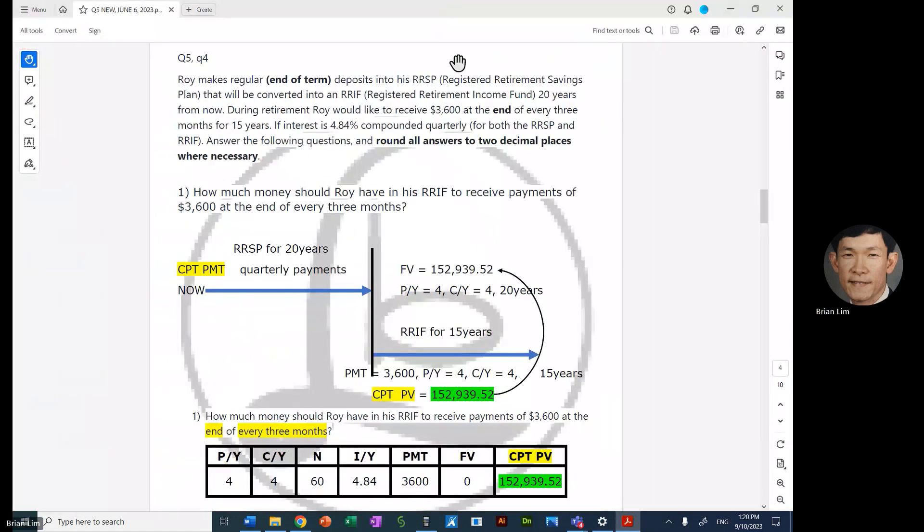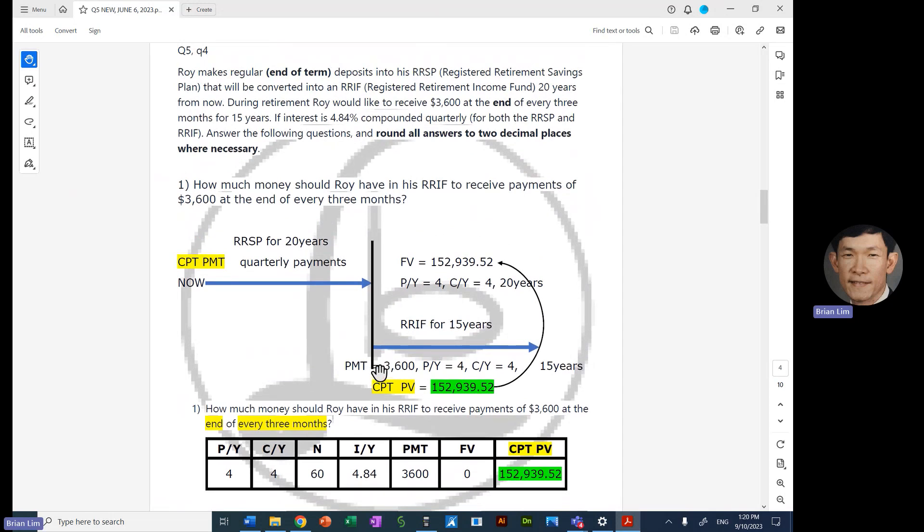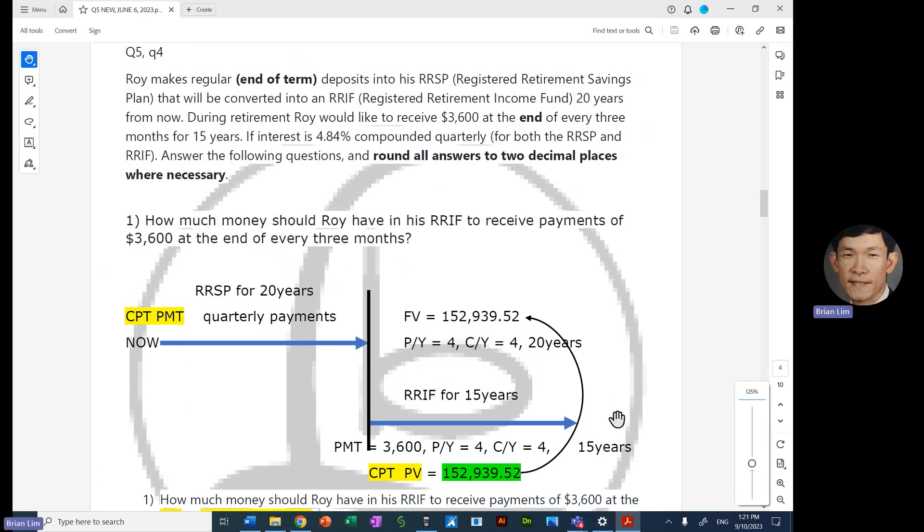Here we have the RRSP, you make contributions and then you go to the RRIF. So what you have to do is identify how much money, this is the $3,600 here, that would be required. It's retirement planning, planning for retirement. So Roy would like to receive $3,600 end of every three months, that means four times per year, and the compounding is quarterly. As you can see, the numbers are already calculated, but we'll go through how the calculation is done.